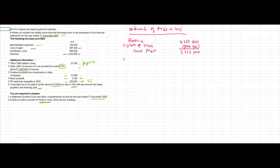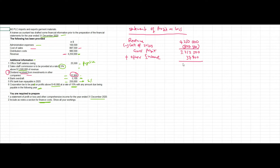After gross profit, you need to add other income before deducting any expenses. We have one item of other income, which is the dividend received from investments in other companies — 37,800. So that has to be added here, giving a total of 3,390,300.